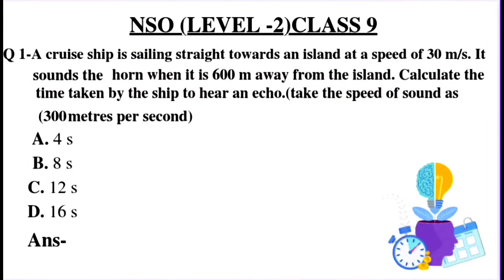Question number 1: A cruise ship is sailing straight towards an island at a speed of 30 meters per second. It sounds the horn when it is 600 meters away from the island. Calculate the time taken by the ship to hear an echo. Take the speed of sound as 300 meters per second. Option A: 4 seconds, Option B: 8 seconds, Option C: 12 seconds, Option D: 16 seconds.